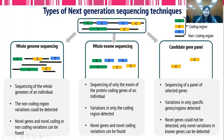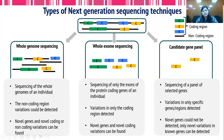Another variation is the candidate gene panel, wherein only specific genes or a specific set of regions in the genome are sequenced — this set is prepared by looking at the disease to be diagnosed, selecting only those causal genes. However, the limitation is that variations lying outside those specific genes cannot be detected, and novel genes cannot be identified. We are limited to the genes that are sequenced.